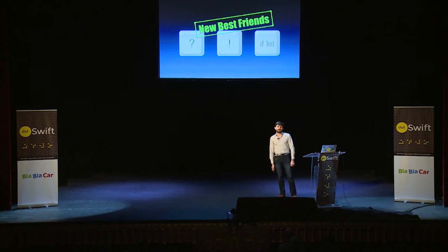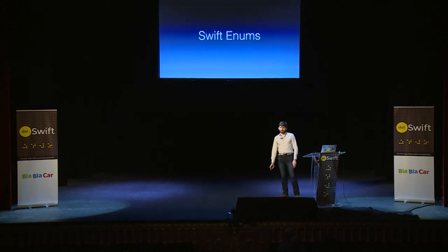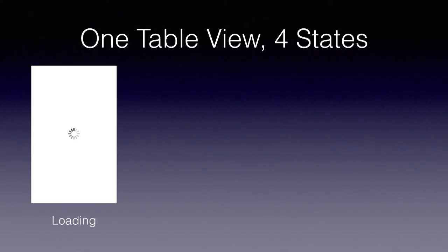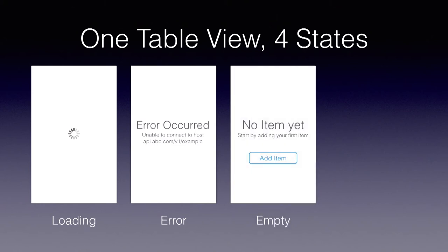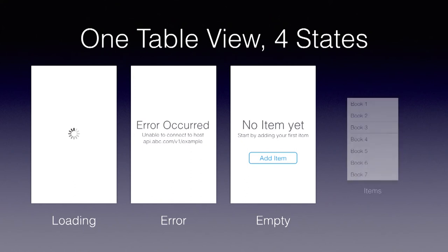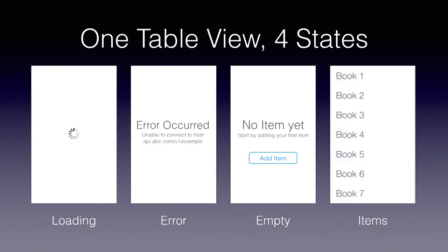So I hope those three keys — question mark, if-let, and nil coalescing — are going to be your new best friends for safer code. Swift also has some cool stuff, namely Swift enums. Swift enums are conceptually similar to Objective-C enums, but much more powerful. To explain that, let's imagine you have an iPhone app with a table view loading data from the network. This table view might have four states: a loading state, an error state where an error is displayed, an empty state with a button to add data, and finally the list of items.